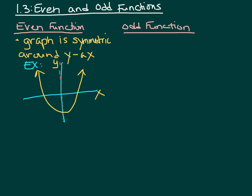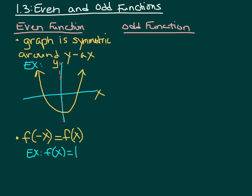We have one other definition for even functions. If a function is even, it's true that for all x in the domain, f of negative x is equal to f of x. For example, take f of x equals the absolute value of x. If you substitute in a negative value for x, because of the absolute value, you end up getting a positive x, which is the same thing we started with — so it equals f of x.